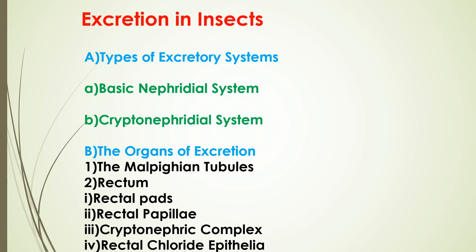The major organs of excretion in insects are the Malpighian tubules and the rectum. The Malpighian tubules are excretory tubules present at the junction of midgut and hindgut. They were first reported by Italian scientist Marcello Malpighi in 1669, and the structures were later named Malpighian tubules by the scientist Meckel in 1820. Malpighian tubules are present in almost all insects except Collembola, some Thysanura, and Aphids.